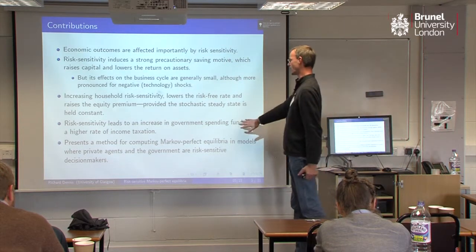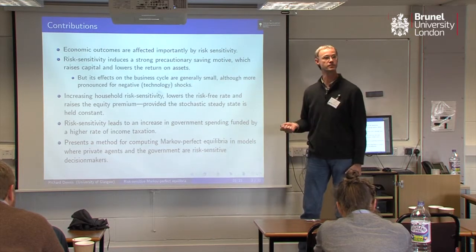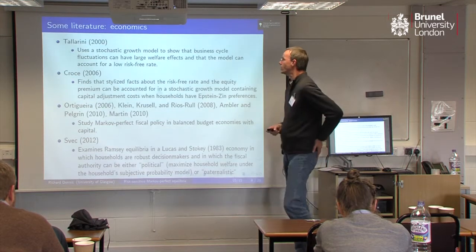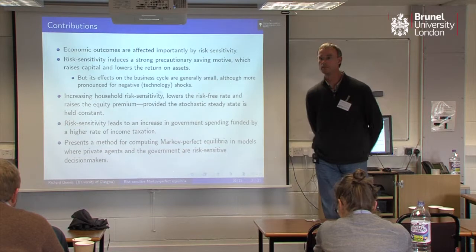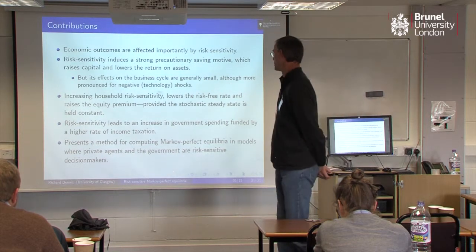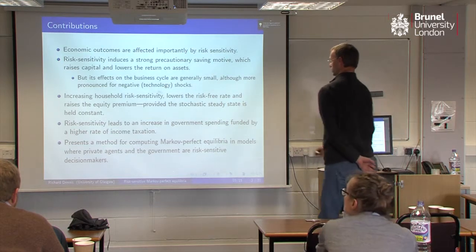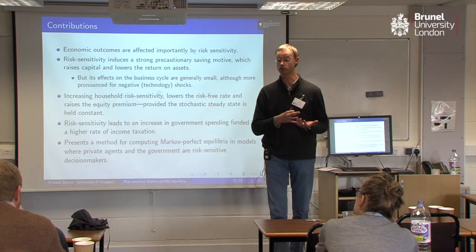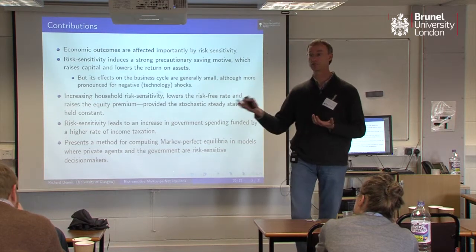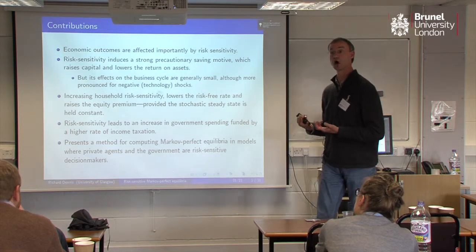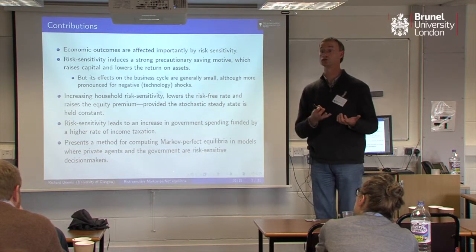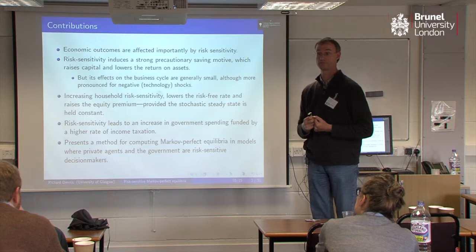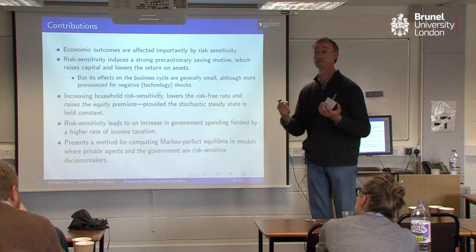Risk sensitivity on the government side leads to an increase in government spending and taxation. The government spending in this model enters into household utility, so it doesn't just disappear. The way the government can help insure households against a risky consumption stream is by providing government services, so it insures their lifetime utility in this way.